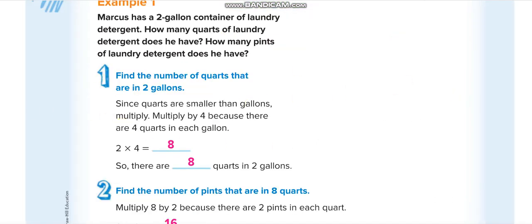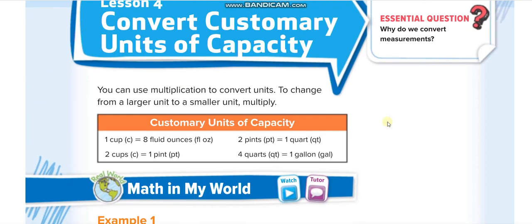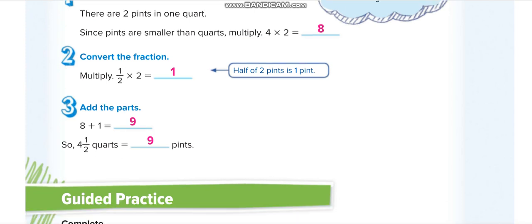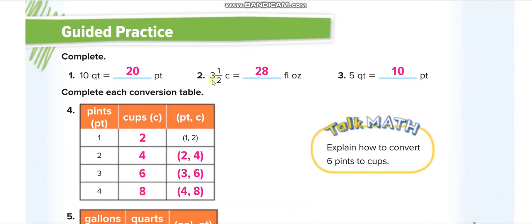One cup is equal to eight fluid ounces, so half a cup is four fluid ounces. Three cups times eight is twenty-four fluid ounces. So three and a half cups: twenty-four plus four is twenty-eight fluid ounces. Five quarts times two is ten pints.